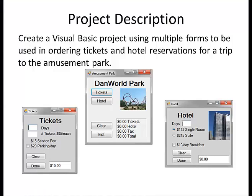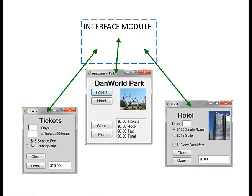Your job is to create a Visual Basic project using multiple forms to be used in ordering tickets and hotel reservations for a trip to the amusement park. When people press the tickets button a new form will open up and the number of days and the number of tickets can be entered. When the hotel button is pressed someone can enter the number of days, select the room and decide whether they want an optional breakfast. We will need an interface module so that we can pass the data back and forth between these different forms.